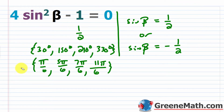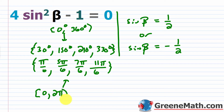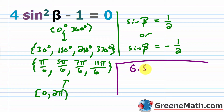These are the solutions for the restricted interval from 0 to 360 degrees, or 0 to 2 pi. Sometimes they ask you to solve over a specific interval, and other times they ask for the general solution.